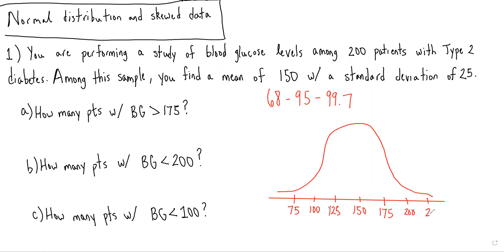So for question part, for part A of the question, we are asked, how many patients will have a blood glucose greater than 175? So what is this proportion of patients?